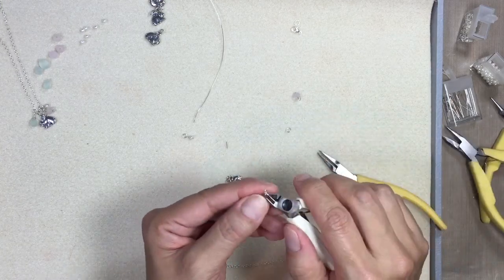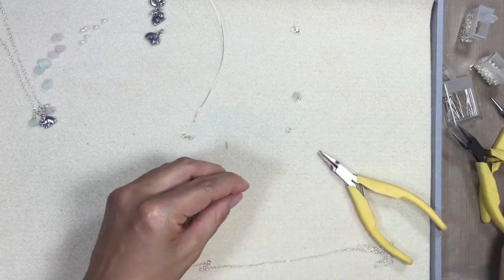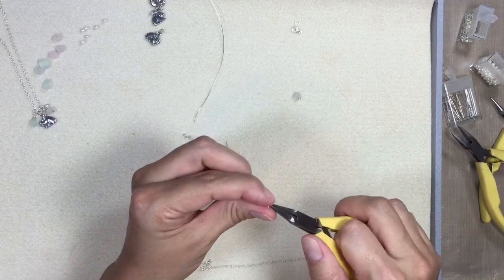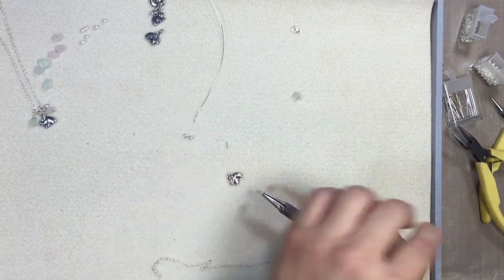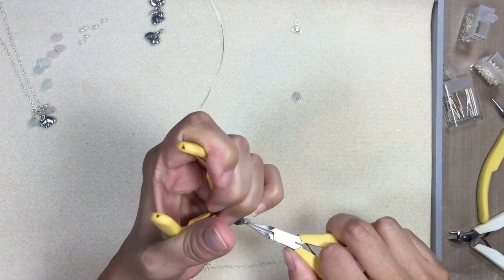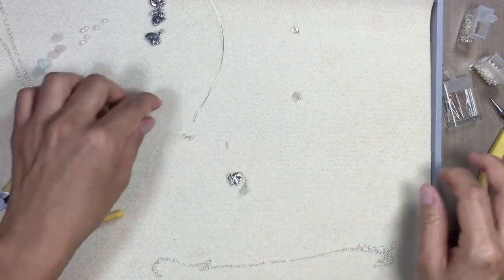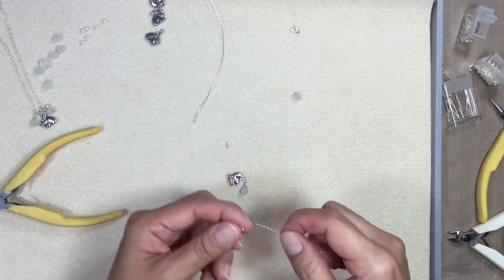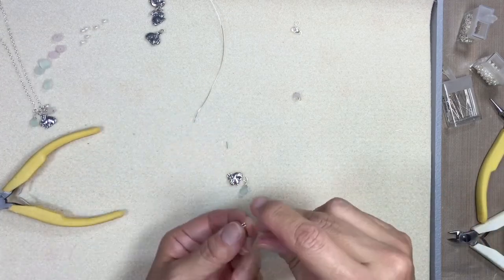And now the briolette wrap is done. We'll connect this to a jump ring. So I'm connecting it to jump rings because I want to have the ability to take these off if I want to or have them move around freely next to the bunny.